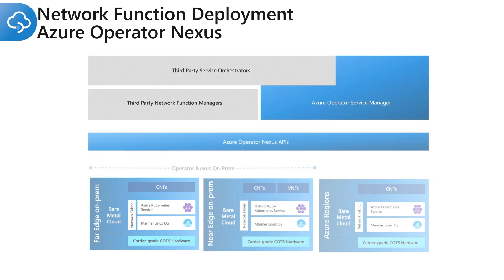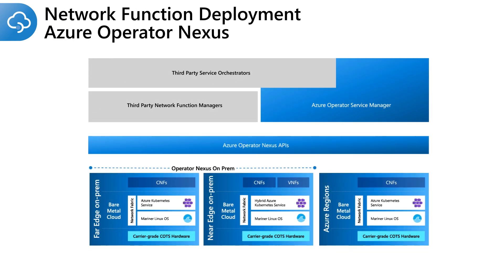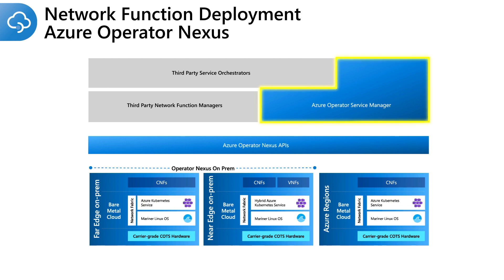Azure Operator Nexus simplifies 5G service deployment by delivering an integrated solution that includes managed network fabric automation and integrated network packet broker, hybrid Azure Kubernetes service with features such as SRIOV, DPDK, and CPU pinning for efficient data plane processing, and a reliable and scalable network function deployment automation using Azure Operator Service Manager, all delivered using Azure Resource Manager APIs.